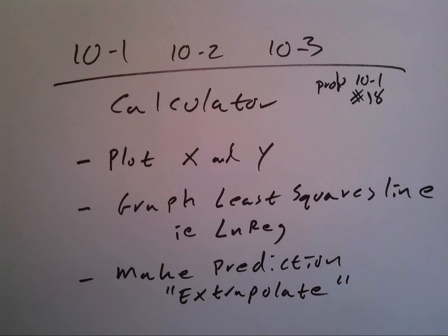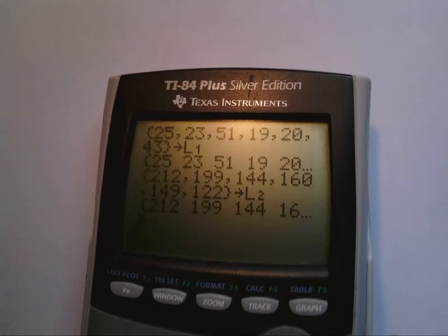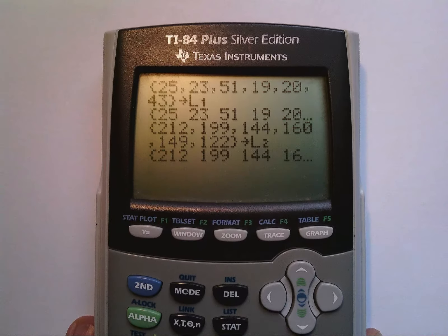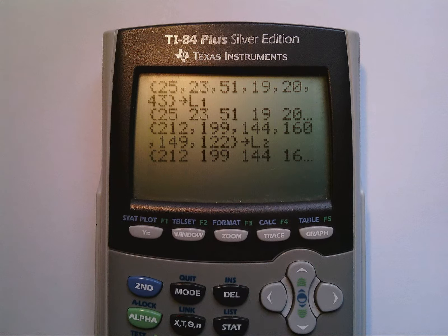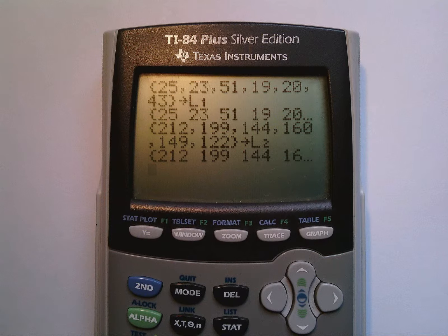All right, so here we go. I've already entered in the data to save the time. L1, my explanatory, is 25, 23, 51, 19, 20, 43.